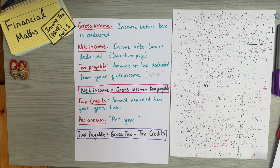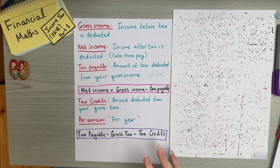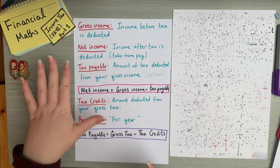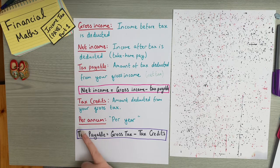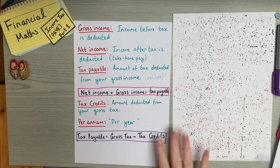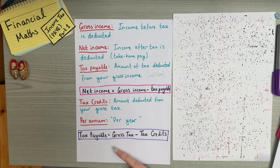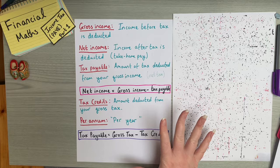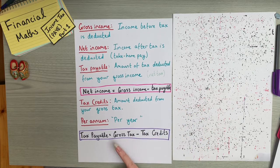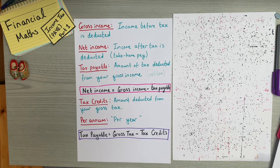Tax credits are amounts deducted from your gross tax. This video will focus on how to calculate gross tax. We also have the term 'per annum', which is Latin for 'per year' — so if someone earns €50,000 per annum, that means per year. Tax payable, or net tax, equals gross tax minus tax credits. Tax credits are the government's way of saying: we need to take your money, but we won't take all of it.